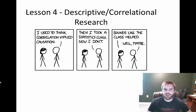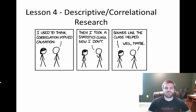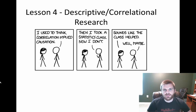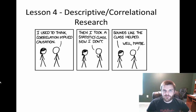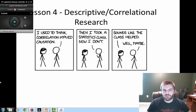Welcome back to the AP Psychology course series. This is lesson number four on descriptive correlational style research. This lesson is going to be a direct follow-up to the previous, which focused on the experimental style of research and more of the causation. This one, on the other hand, is more about correlation.